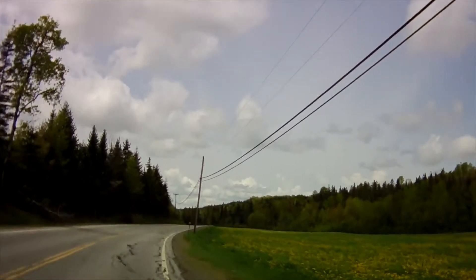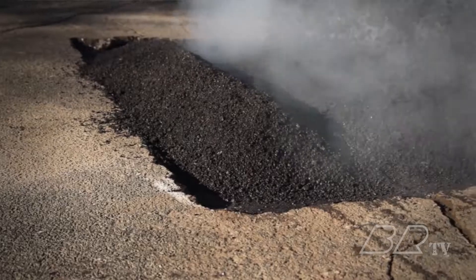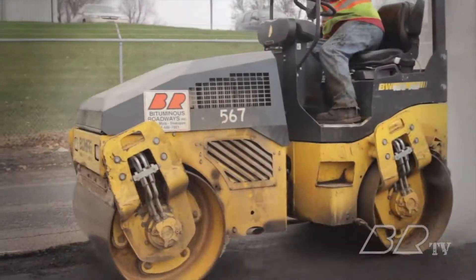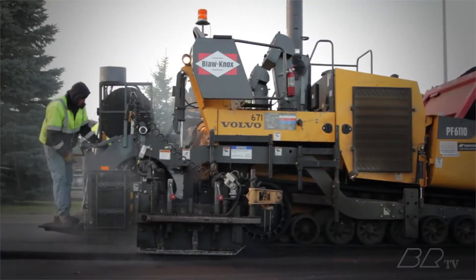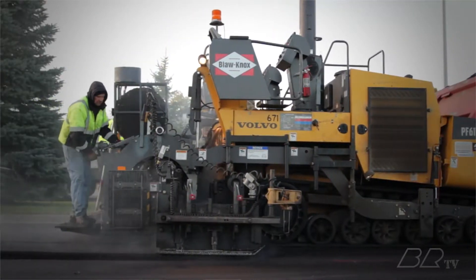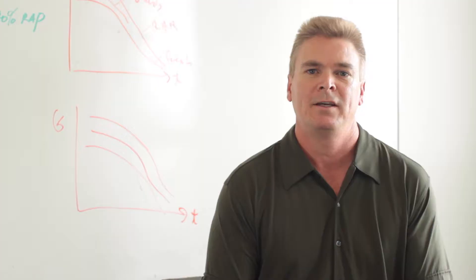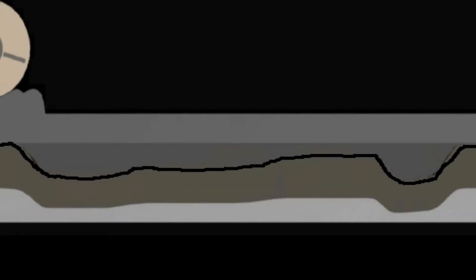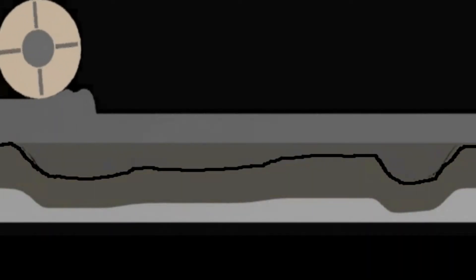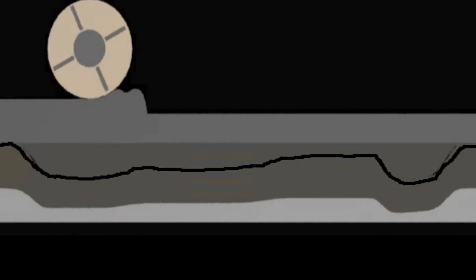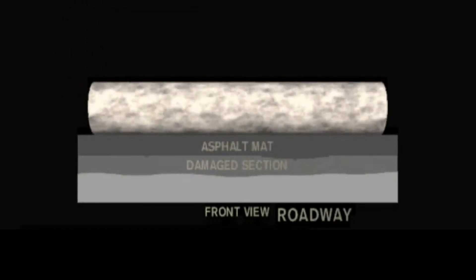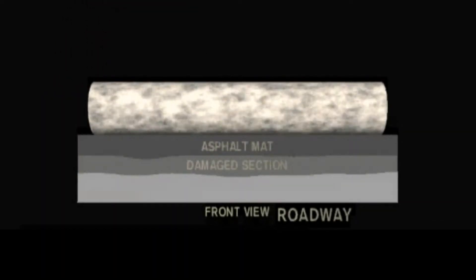Everybody knows that there's rough and bumpy roads out there, and there's always been only one way to fix them. They dump a bunch of asphalt out in front of a big flat plate. It can't produce a smooth surface because it's not providing enough material over the depressions. The heavy roller bridges over these sections and the material doesn't fully compact.